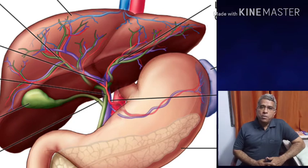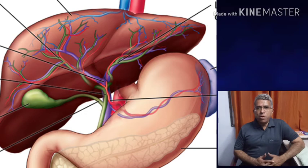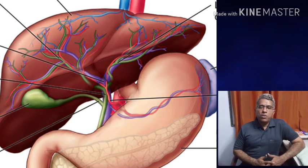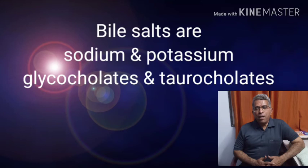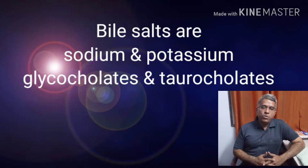Liver secretes bile. Bile does not have any enzymes, but it contains pigments — namely bilirubin and biliverdin — which are excretory in nature. Bile also contains bile salts: sodium, potassium, glycocholate, and taurocholate are the bile salts present within the bile juice.